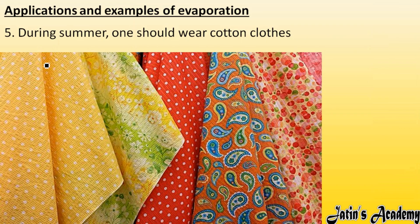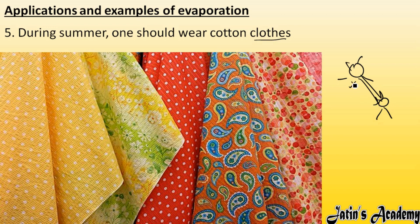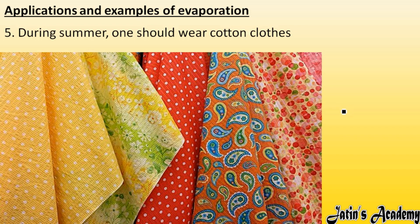The fifth application: during summer one should wear cotton clothes. White or light-colored cotton clothes are good reflectors of heat. When standing in sunshine, the sunlight reflects back to the atmosphere instead of being absorbed by our body, so we don't feel as hot. Cotton clothes also absorb sweat from our body, and by absorbing the sweat it evaporates fast into the atmosphere. Since evaporation leaves a cooling effect behind, by wearing cotton clothes we feel cool during summers.